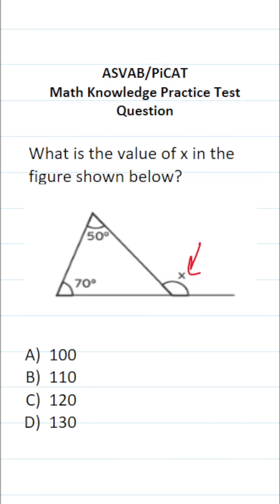In order to determine the value of x, it's going to be very helpful to know the measure of this missing angle in this triangle here. And to determine the measure of this missing angle in this triangle, we can use the triangle sum theorem, which says that all the angles in a triangle add up to 180 degrees.